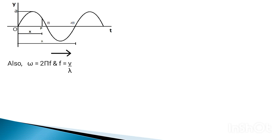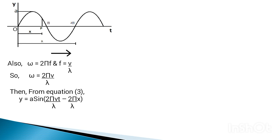We also have omega equals to 2 pi f, where f is the frequency of vibration, and f equals to v over lambda, where v is the velocity of the wave propagating in a medium. From these two equations we get omega equals to 2 pi times v over lambda. Substituting this into equation 3, we get y equals to a sin(2 pi over lambda times (vt minus x)), which is the equation of a progressive wave in another form.